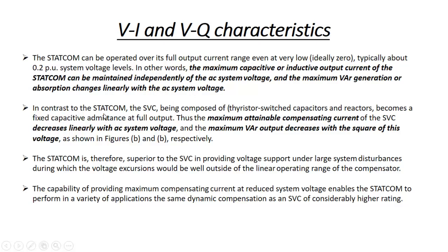In the case of the SVC, composed of thyristor-switched capacitors and reactors, it becomes a fixed capacitor admittance at full output. The maximum attainable compensating current of the SVC decreases linearly with the AC system voltage because current depends on voltage. The maximum VAR output, equal to V² divided by Xc or V² times Bc, decreases with the square of the voltage.